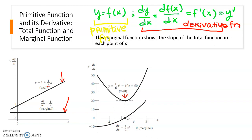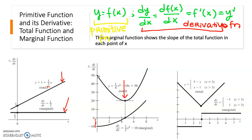To the left of the minimum point of the total function, the slope at each point is negative, so the marginal function is in the negative range — below the x-axis. To the right of the minimum point, the slope and the points in the marginal function show positive and increasing values. This increasing slope behavior will be discussed further later.